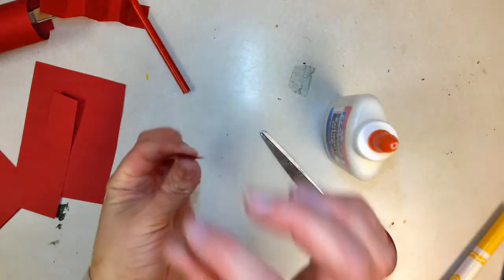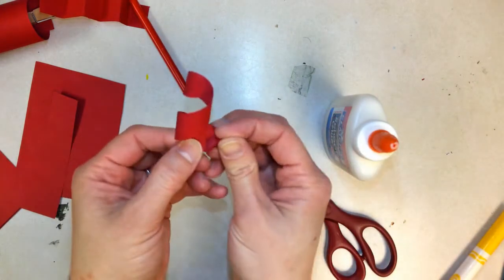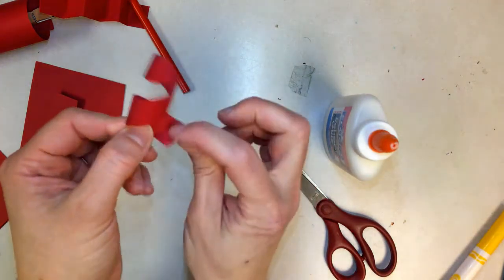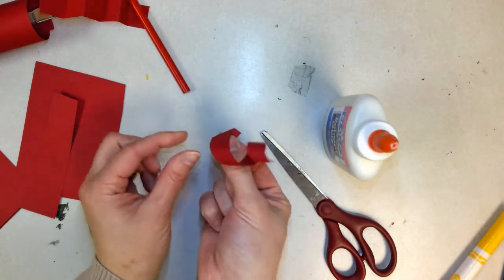Then I've got a nice curly seaweed too. I just create a tab by folding it and then I can glue it on.